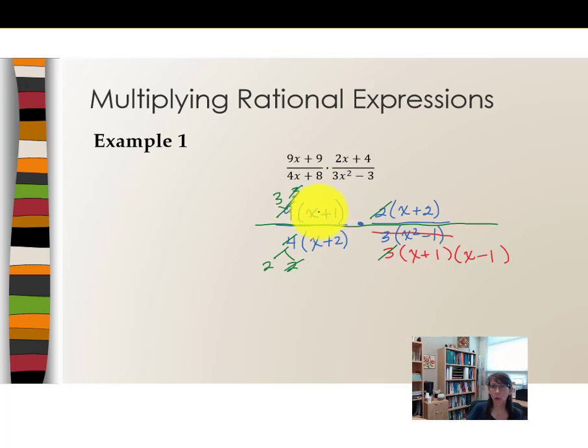Then we go on to the quantities. The quantity x plus 1 is not the same as quantity x plus 2, so no reducing there. But looking over here, here's a quantity of x plus 1 that's going to reduce completely with this quantity of x plus 1. Do you see any other quantities that would reduce? Hopefully you saw x plus 2 with x plus 2.